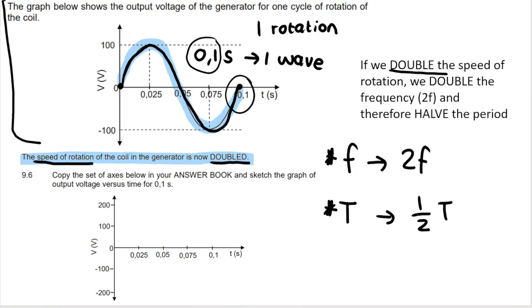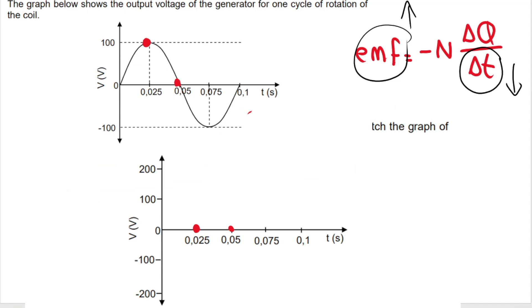Remember, based on our knowledge of generators, if we move the coil faster, if we rotate the coil faster, you should know that according to Faraday's law of electromagnetic induction, what it means is because we are reducing the time that it takes to complete one wave, time is going down. So EMF, the voltage that is being produced, is going to increase.